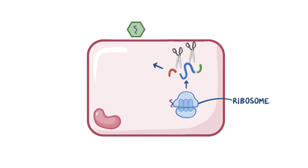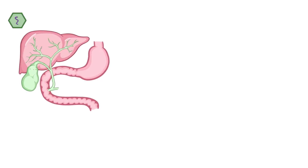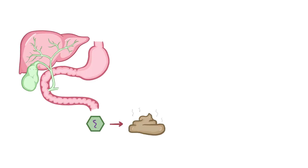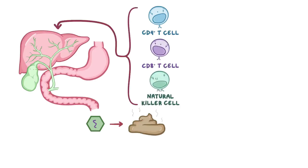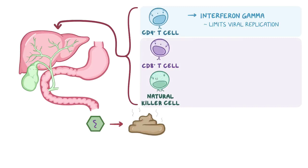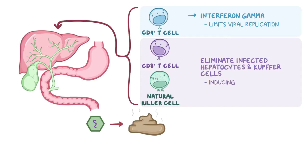New viral particles can also exit when the infected cell is destroyed by the immune system. The presence of hepatitis A virus outside the cell has two-fold effects. First, after they exit the cell, viral particles are secreted into bile, travel to the small intestine, and leave the body through stool. Second, the immune system reacts by bringing CD4-plus and CD8-plus T cells and natural killer cells to the liver. CD4-plus T cells secrete interferon gamma to limit viral replication, while CD8-plus T cells — also known as cytotoxic T cells — along with natural killer cells, eliminate infected hepatocytes and Kupfer cells, mostly by inducing programmed cell death called apoptosis.